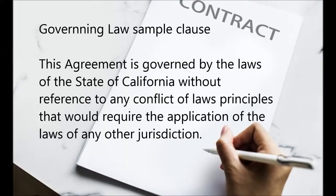Here is an example of a governing law clause: 'This agreement is governed by the laws of the state of California, without reference to any conflict of laws principles that would require the application of the laws of any other jurisdiction.'